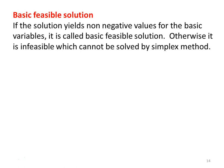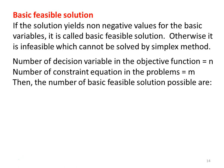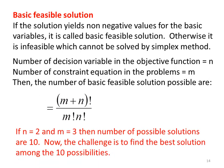The number of decision variables in the objective function equals n, the number of constraint equations equals m, and the number of basic feasible solutions possible is (m+n)! / (m! × n!). For example, with n=2 decision variables and m=3 constraint equations, the number of possible solutions is (5)! / (2! × 3!) = 10. The challenge is to find the best solution among these 10 possibilities.